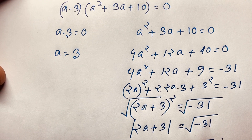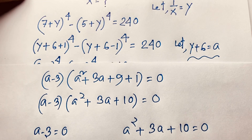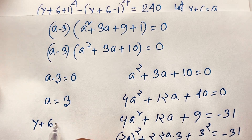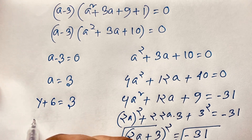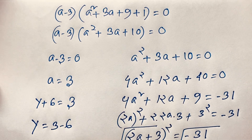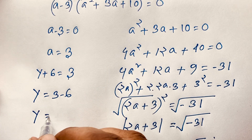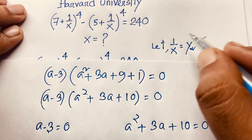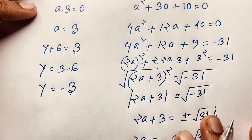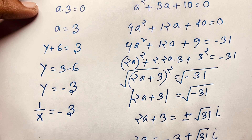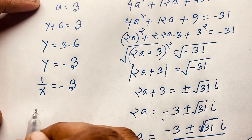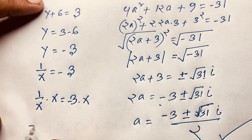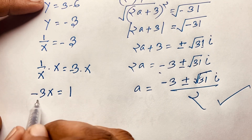The real solution is a = 3. Recalling that a = y + 6, we get y + 6 = 3, so y = -3. And since y = 1/x, we have 1/x = -3. Multiplying both sides by x gives 1 = -3x.